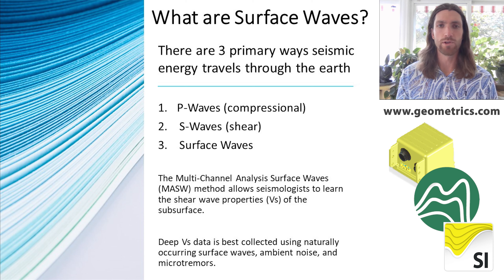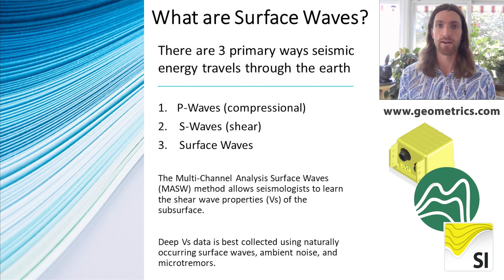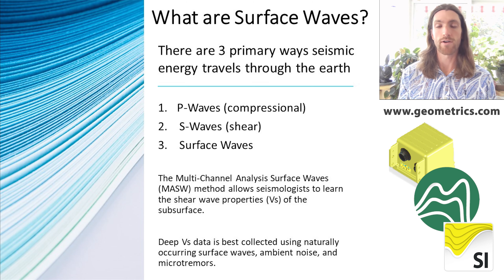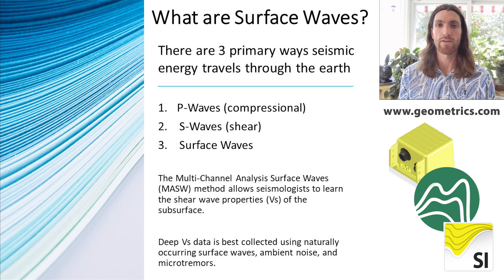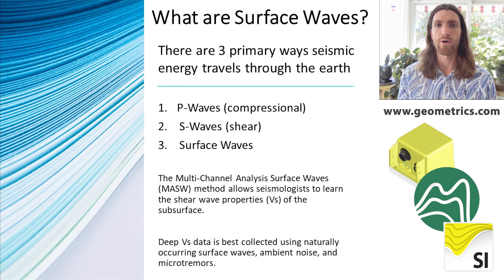Let's do a little background on surface waves, which is what the Atom seismograph collects. There are three types of seismic waves: P waves, S waves, and surface waves. Surface waves travel along the surface. P waves are compressional waves and S waves are shear waves. When we look at engineering and structural foundational work — where we're concerned about how a site or building will respond to an earthquake — we're interested in the shear wave properties.